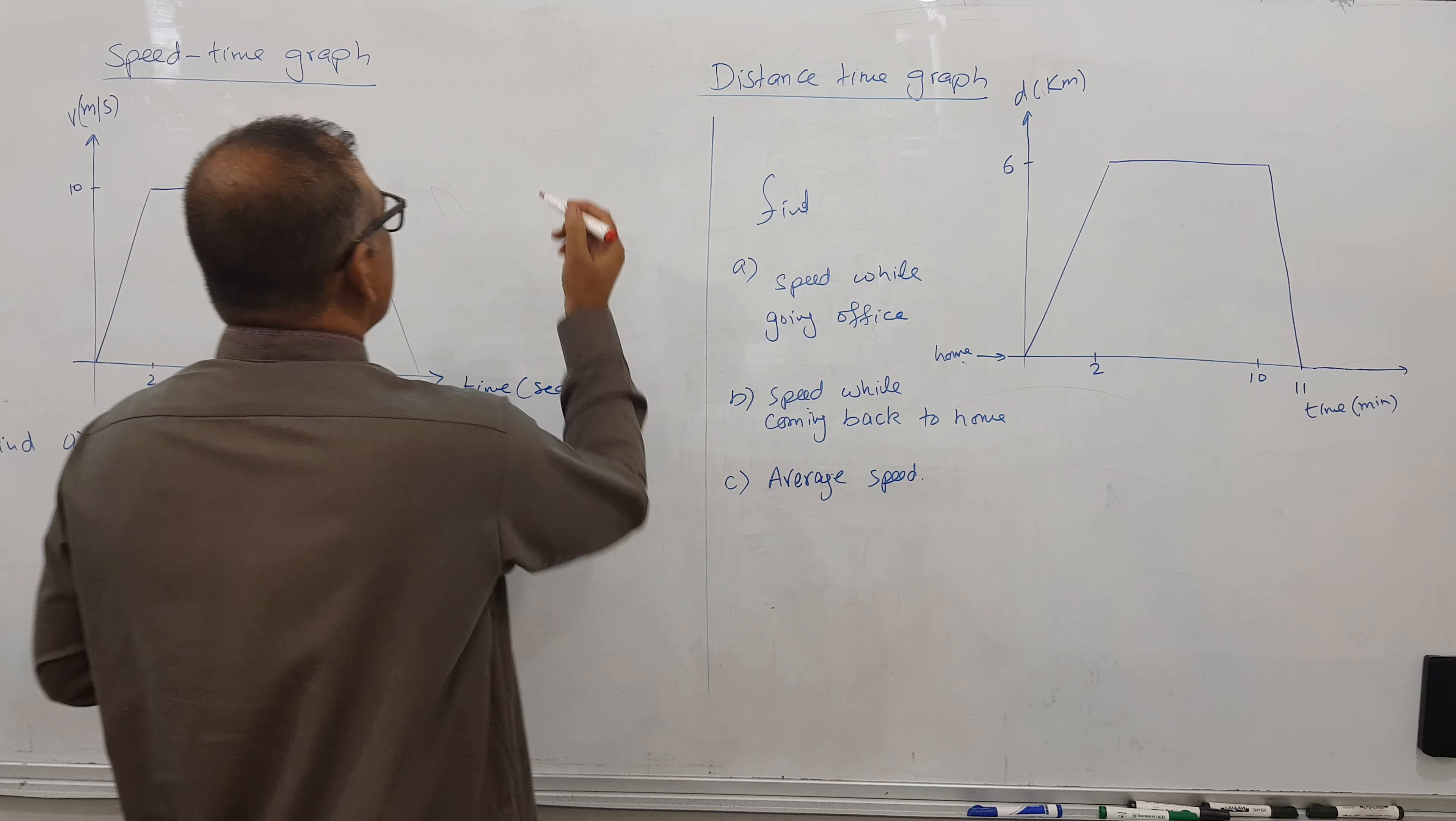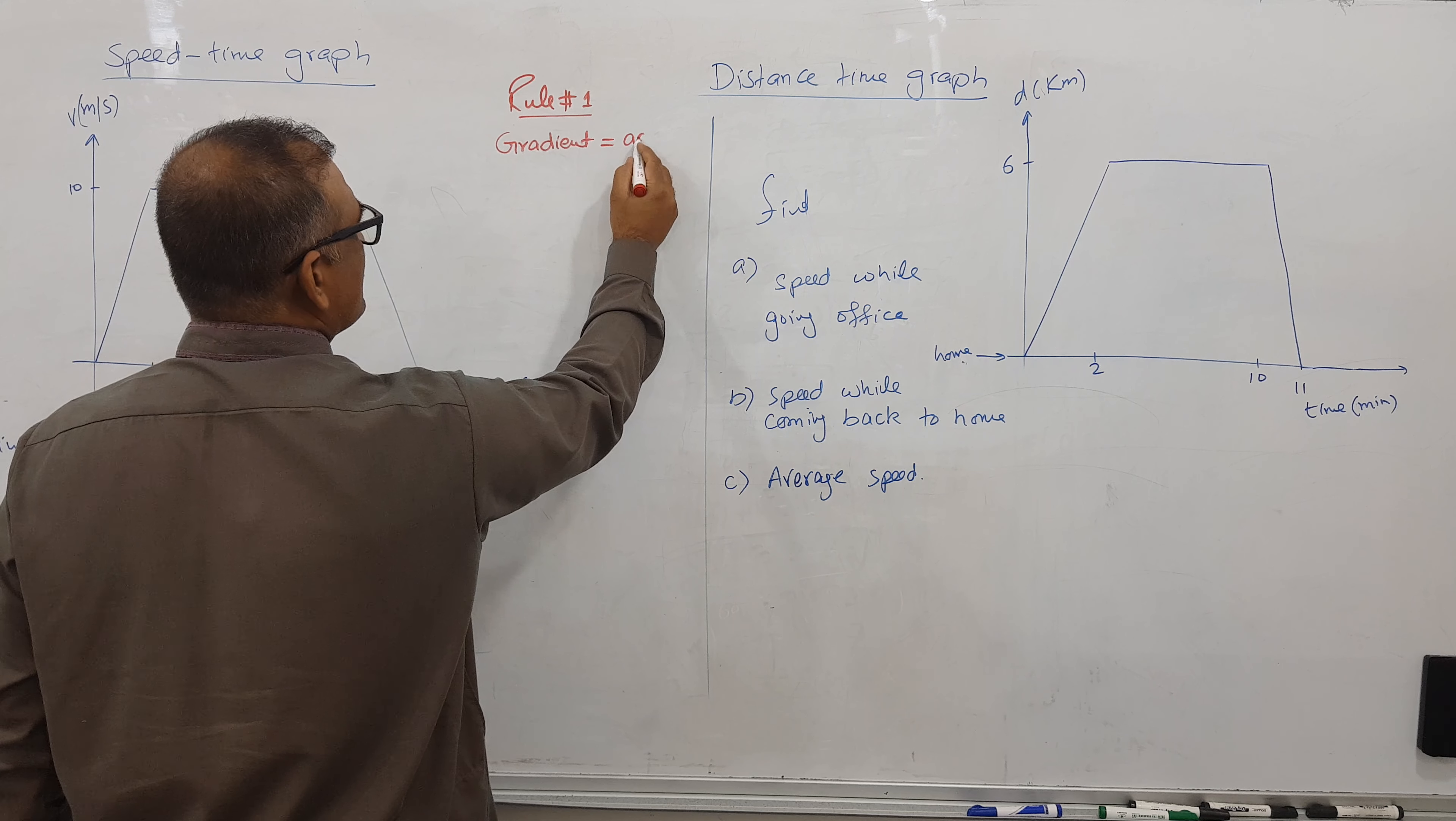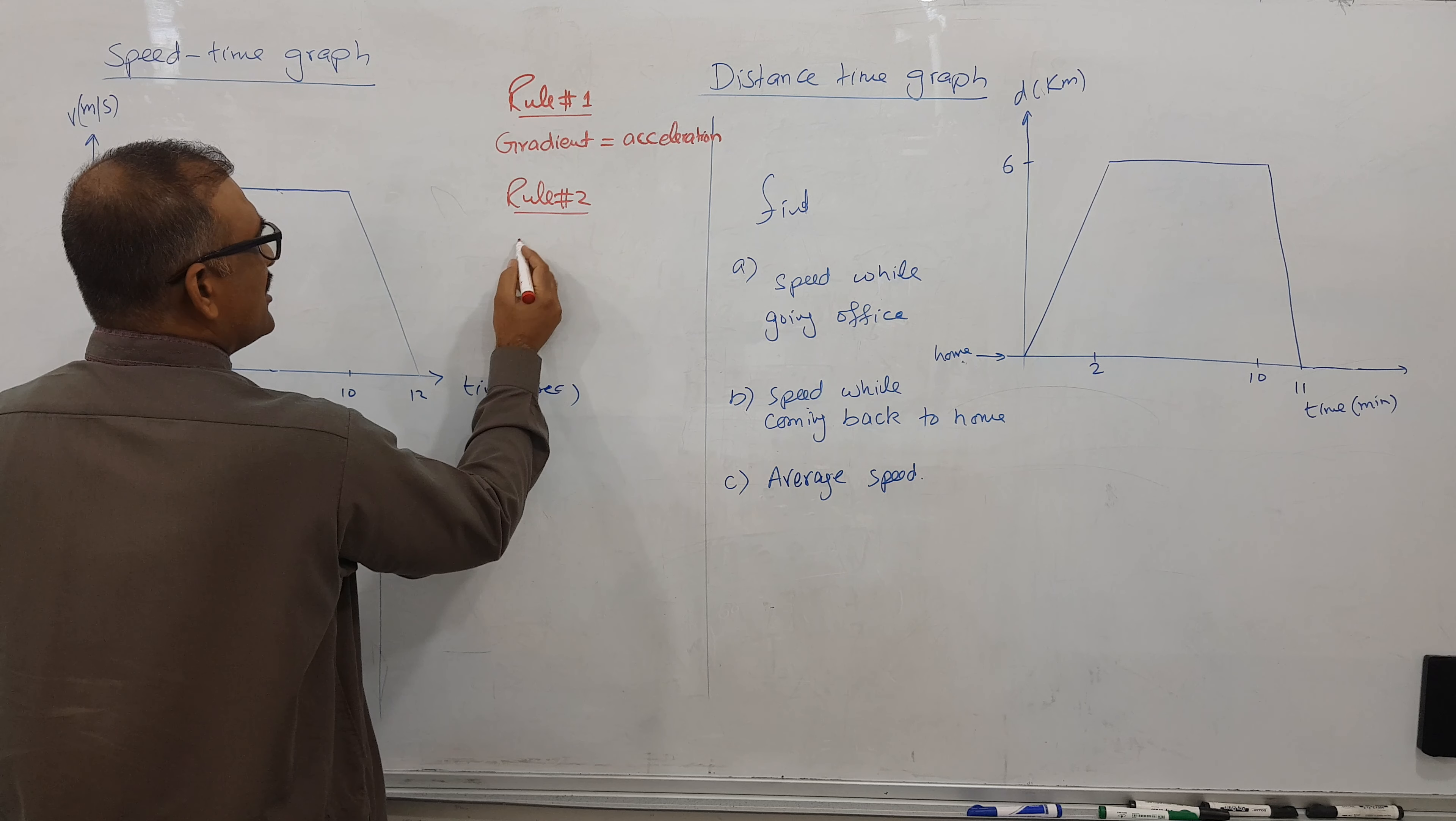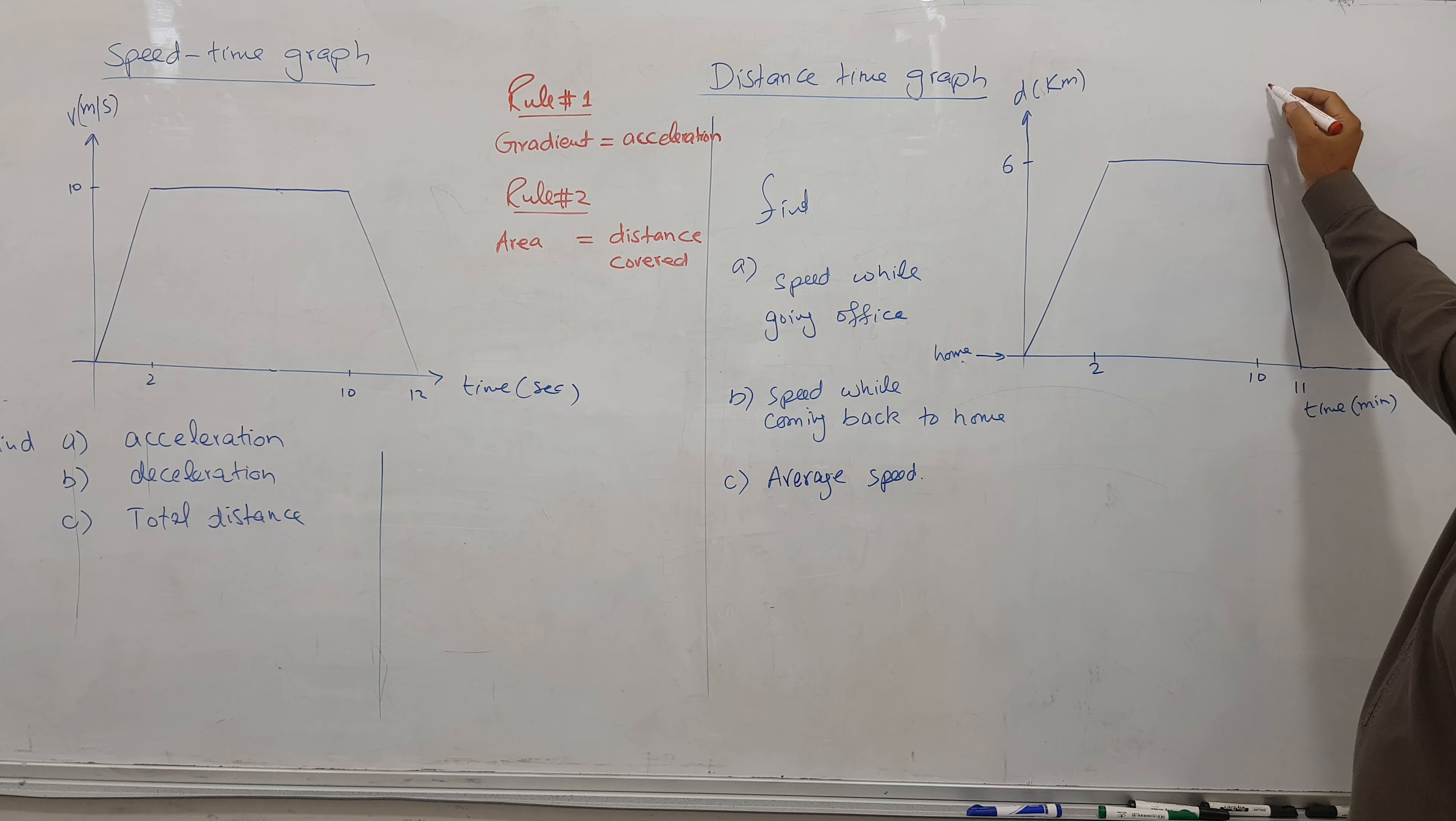We have two formulas here for speed-time graphs. Rule number one: gradient of a line is equal to acceleration. Rule number two: the area under lines represents distance covered or distance traveled.